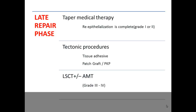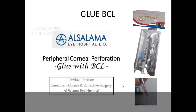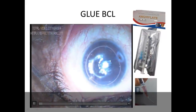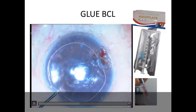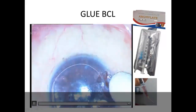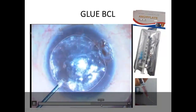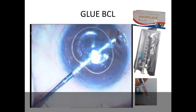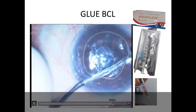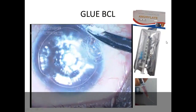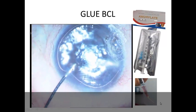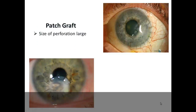This is a video of a glue-BCL procedure: the surface epithelium is debrided, the anterior chamber is reformed with air, glue is placed on the surface, and a bandage contact lens is applied. The glue used is Amcrylite. A patch graft is required when the perforation or opening is more than 2mm, as glue will not stay in those cases.